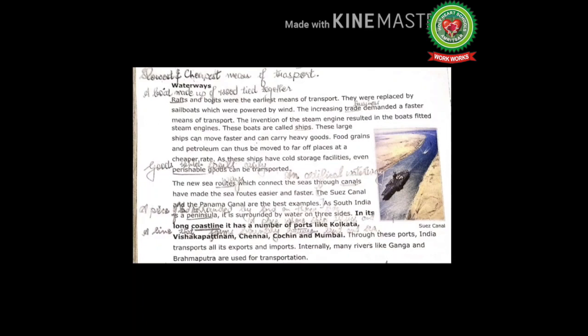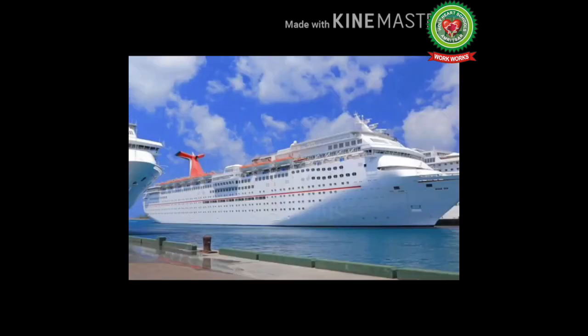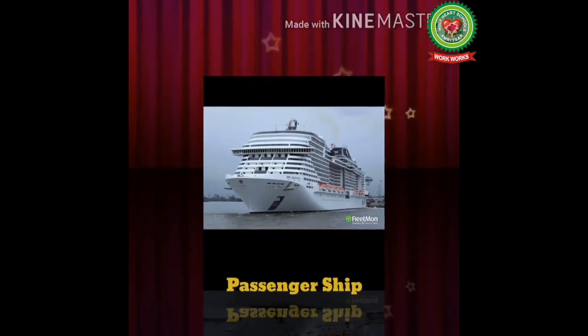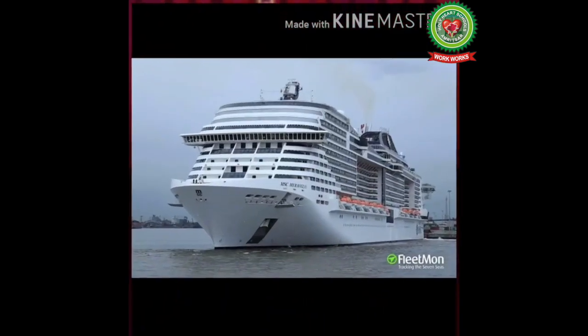Ships with steam engines can run fast compared to rafts and boats, and can carry goods as well as passengers to far-off places. There are three types of ships: first, passenger ships — ships which carry passengers, for example the Titanic; second, cargo ships — ships which carry goods; and third, tanker ships — ships which carry oil and petroleum. Here you can see a passenger ship, for example a cruise ship.